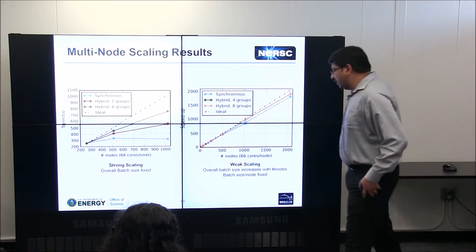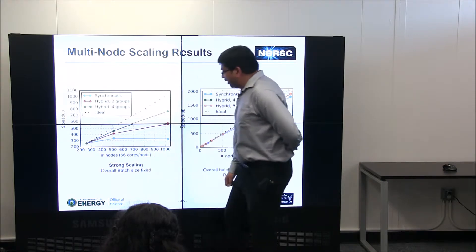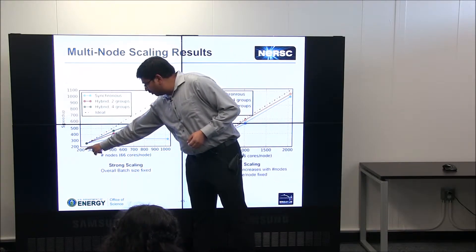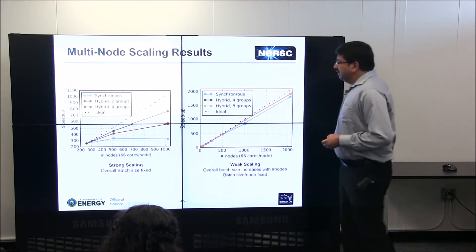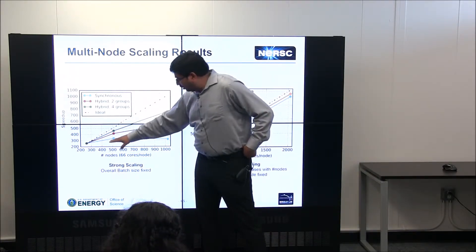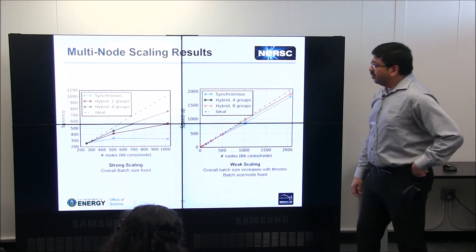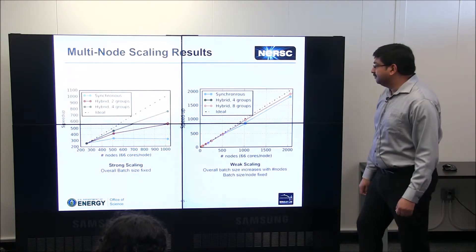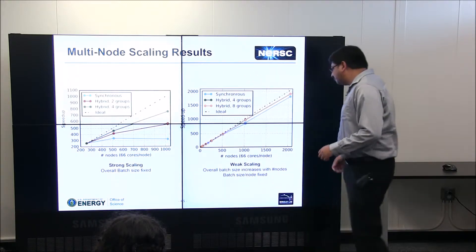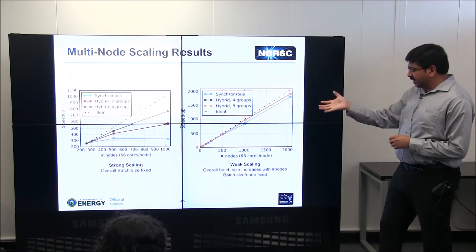These are the scaling results. In the strong scaling setup — fixing the problem size and throwing more nodes at it, from 256 to 1,024 nodes — the synchronous model saturates around 512 nodes, beyond which adding more nodes provides no benefit. But the hybrid strategy is able to scale better, which is a good sign. We confirmed the hybrid strategy showed promise and used it for weak scaling configurations.